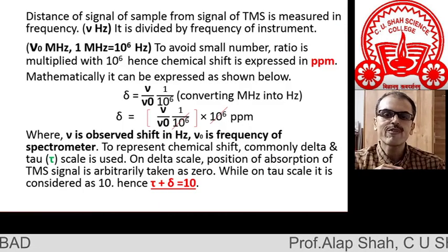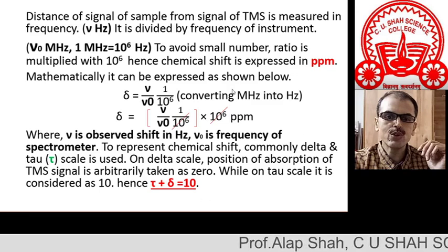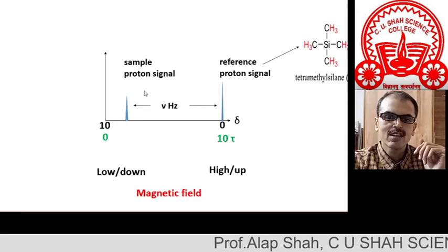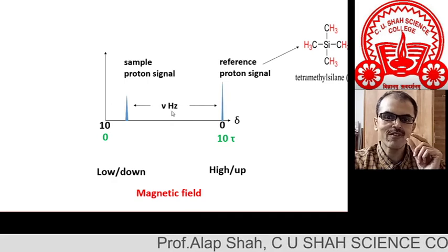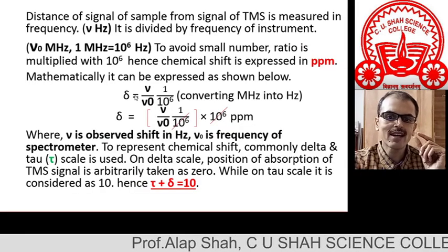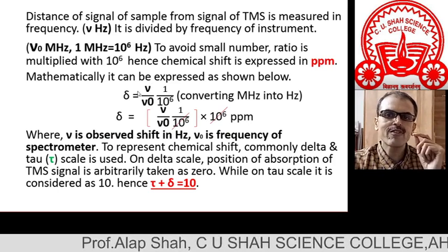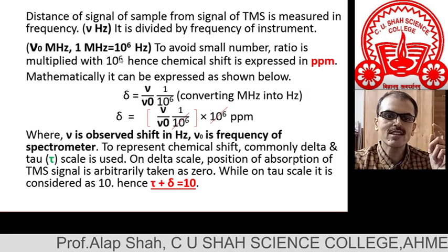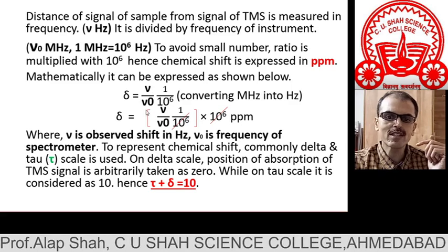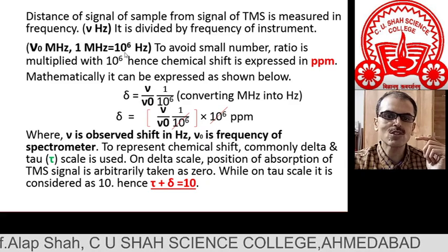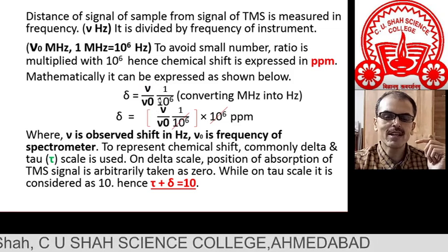Let us discuss the mathematical expression of chemical shift. Chemical shift delta equals nu divided by nu-zero. Nu is the distance between your sample signal and the TMS signal, measured in hertz. Nu-zero is the operating frequency of the spectrometer, which is in megahertz. Since 1 megahertz equals 10 to the power 6 hertz, the numerator is in hertz and the denominator needs to be converted to hertz as well, so that the units cancel and delta is a dimensionless ratio.